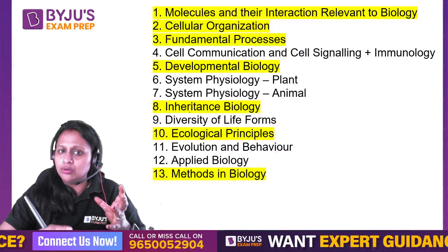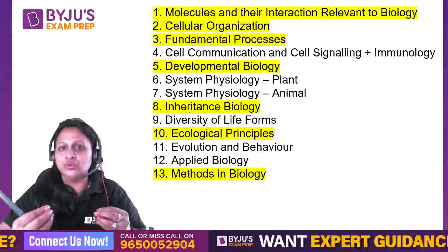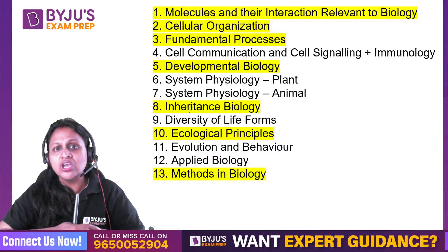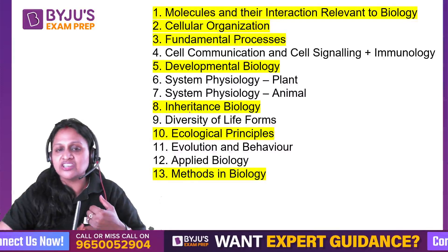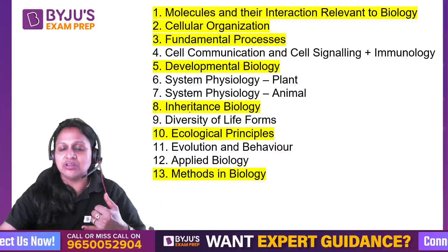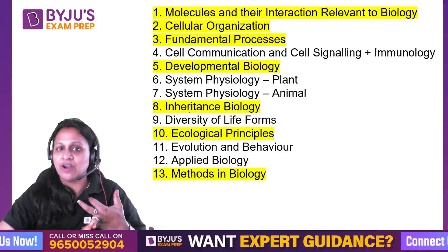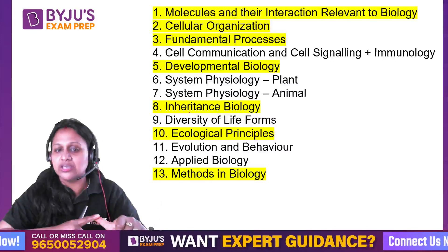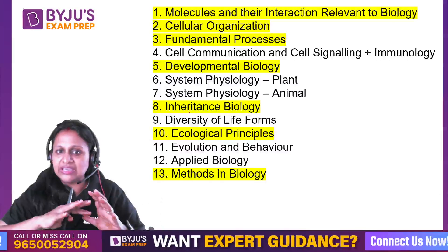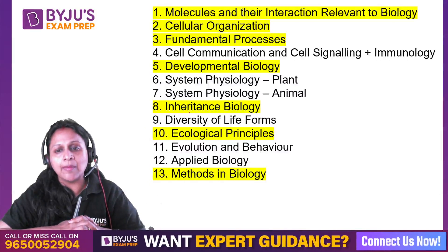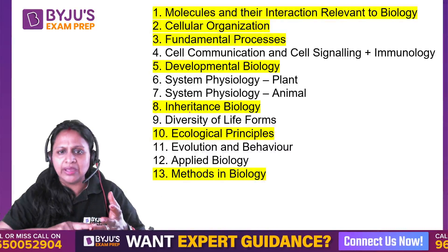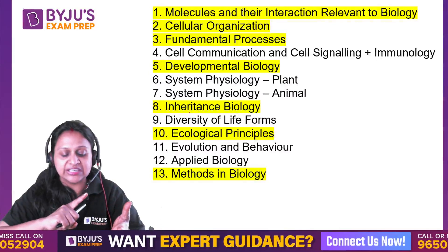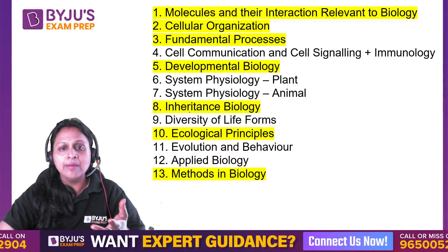Out of the 13 modules, I am highlighting 7 units today on the basis of marks weightage: molecules and their interaction, biochemistry, cellular organization, fundamental processes, development, inheritance, ecology, and methods. These 7 units are important from a CSIR point of view as well.